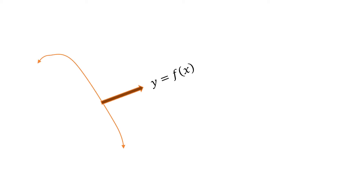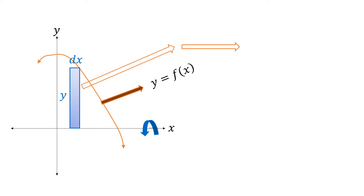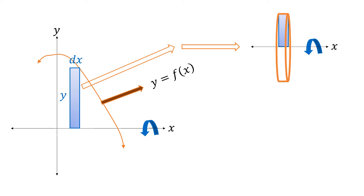If an area is bounded by the curve y equals f(x), the x-axis and the y-axis — in other words, the area is found in the first quadrant — and we want to revolve the first quadrant area about the x-axis, we can form a solid of revolution. To solve the volume, we introduce a vertical rectangular element whose width is dx and whose length is y. If we revolve this element around the x-axis, a disk is formed.